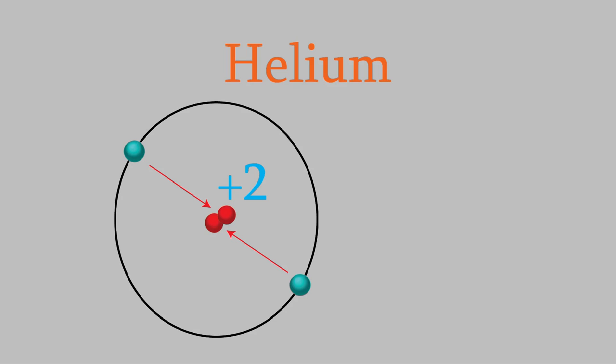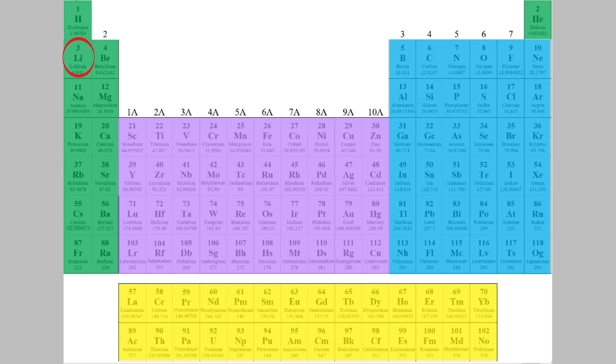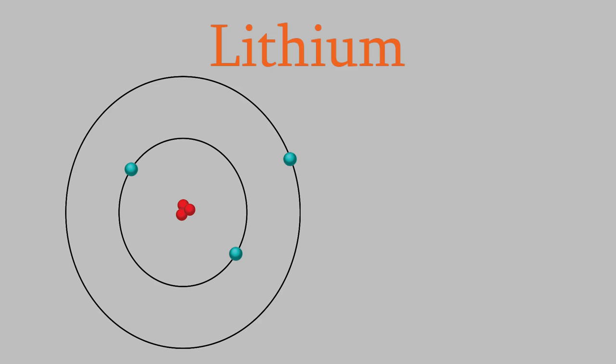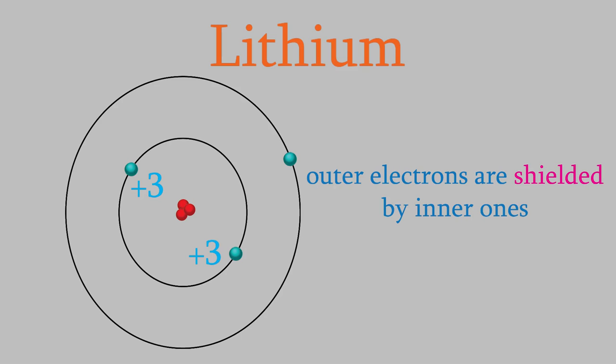But now let's look at the next atom on the periodic table, lithium. Lithium has three protons and three electrons. Two of the electrons are in the n equals 1 shell, but as you learned in earlier videos, the next electron is in the n equals 2 shell. Just like last time, the two inner electrons feel the full charge on the nucleus pulling them in. But unlike those electrons, the outer electron is blocked by the electrons in the inner shell. We say that the outer electron is shielded by the electrons that are between it and the nucleus. Since the nucleus has a charge of plus 3, but there are two inner electrons blocking it, the outer electron only feels a nuclear charge of about plus 1. This is known as the effective nuclear charge.